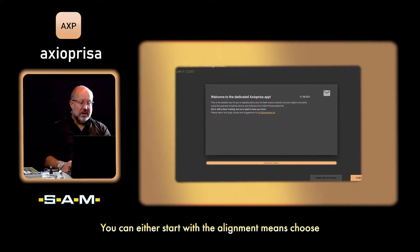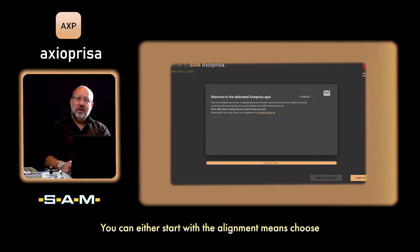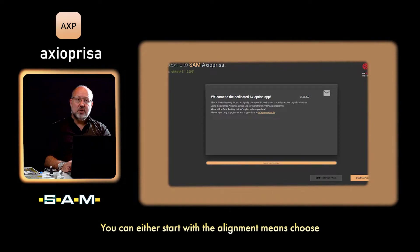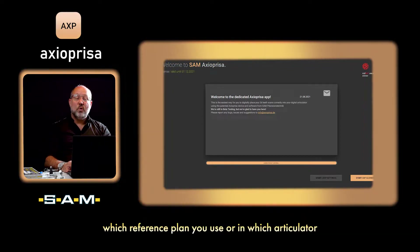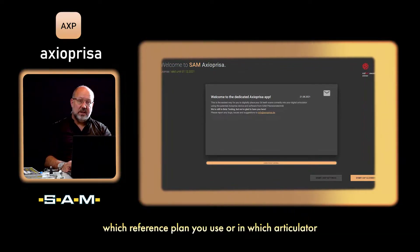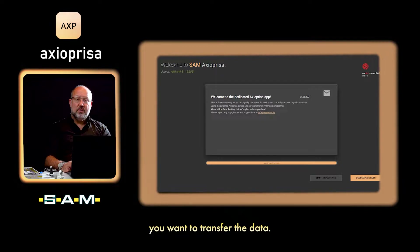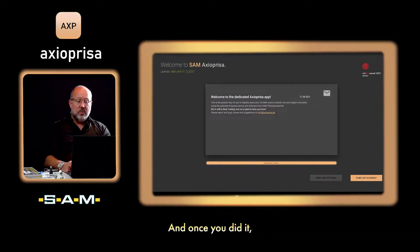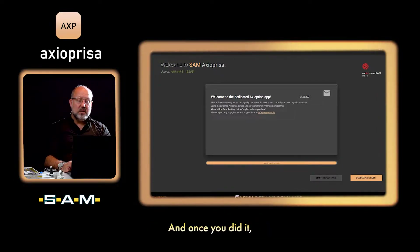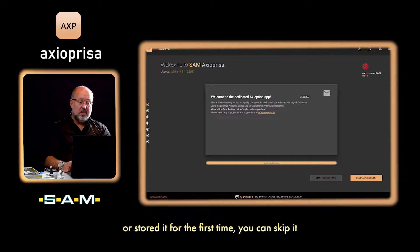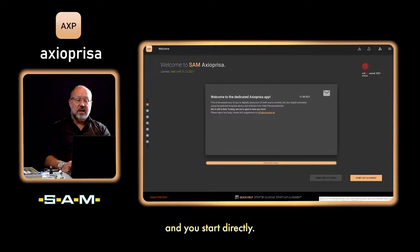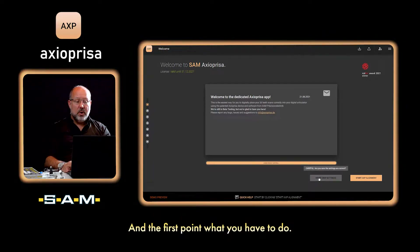You can either start with alignment — choose which reference plan you use or in which articulator you want to transfer the data — and once you've done it or stored it from the first time, you can skip it and start directly. The first point is to choose Start.